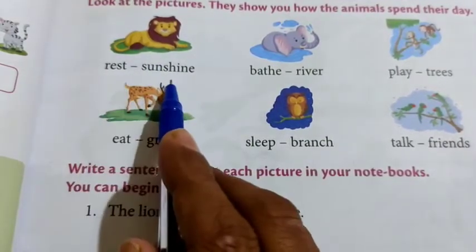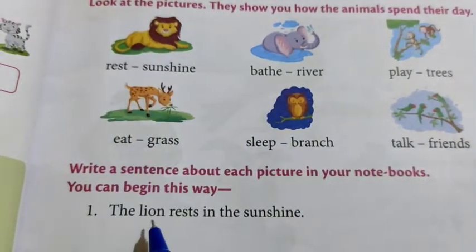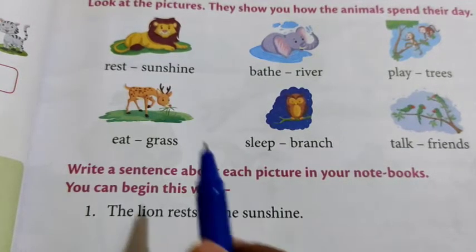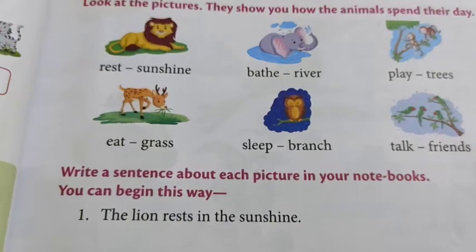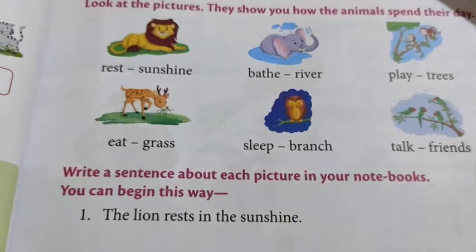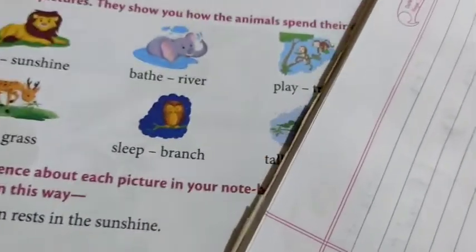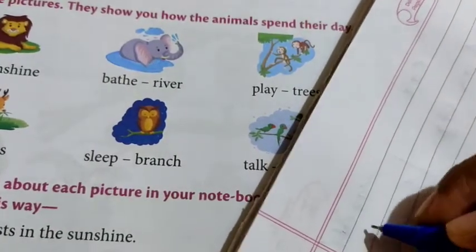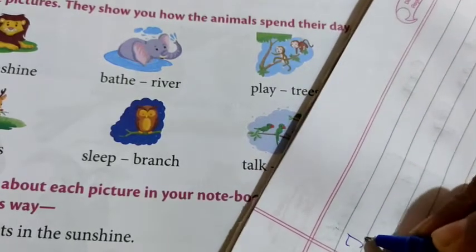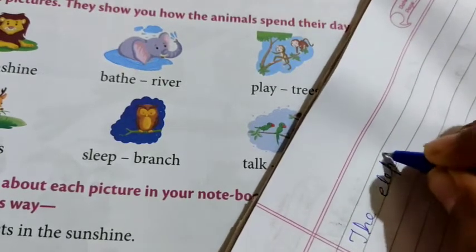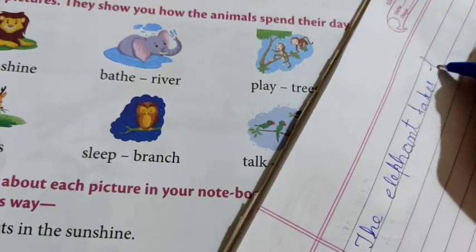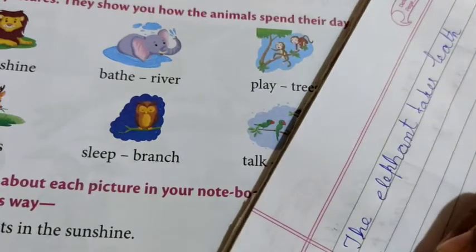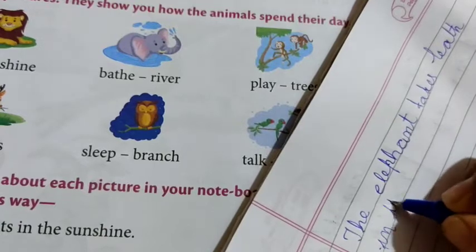The first picture has two words given: rest and sunshine. We have to form a sentence about this picture. The lion rests in the sunshine. Like that we can write the others. For the second one — the elephant. The elephant takes a bath in the river.